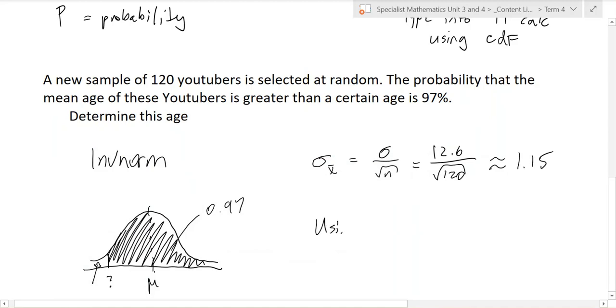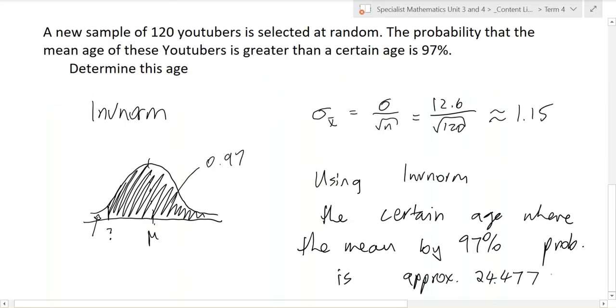Using inverse norm. The certain age is 24.4771. Thanks for watching.